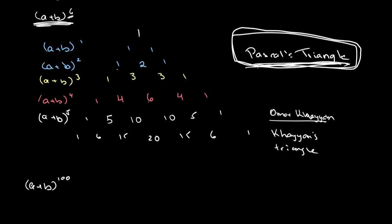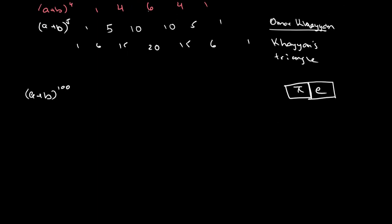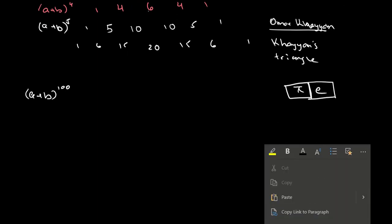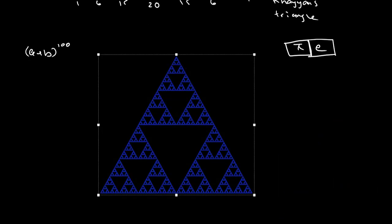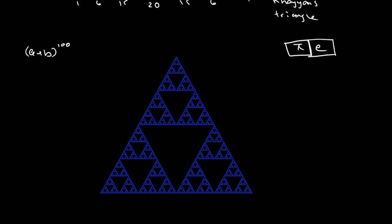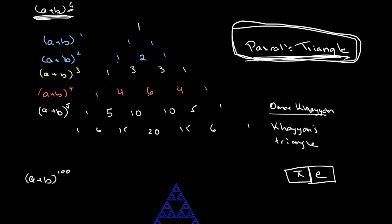Using the triangle, mathematicians have been able to derive the values of pi and e — I won't cover that here, but I've linked a TED-Ed video below. Another interesting fact is that when you highlight all the odd numbers, you get something called Sierpinski's triangle, a mathematical fractal. Mathematicians are still discovering new properties of Pascal's triangle today.